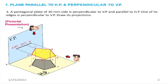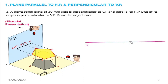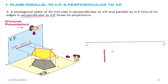Problem 2: A pentagonal plate of 30 mm side is perpendicular to VP and parallel to HP; one of its edges is perpendicular to VP. This is the same condition — plane parallel to HP and perpendicular to VP. So the top view will show the true shape (a pentagon), and the front view will show only a line. One edge of the pentagon is perpendicular to VP.